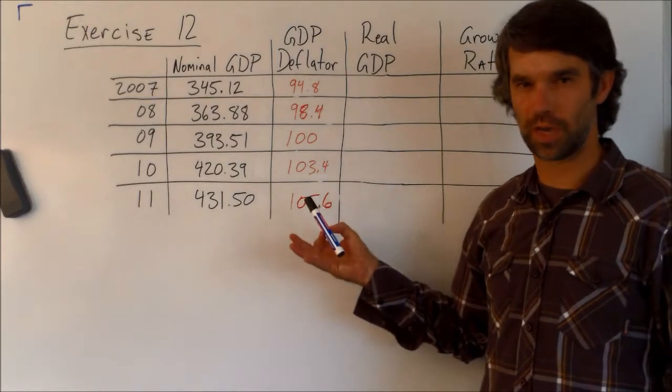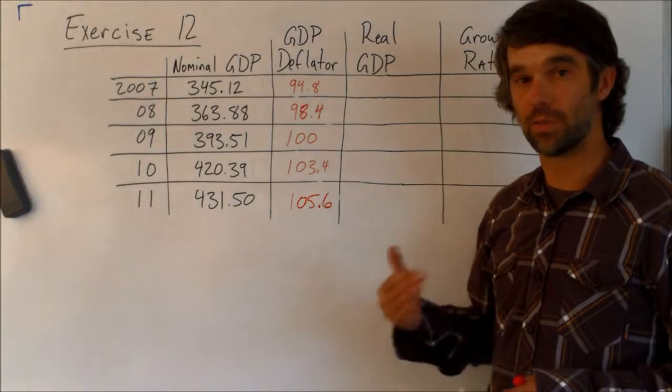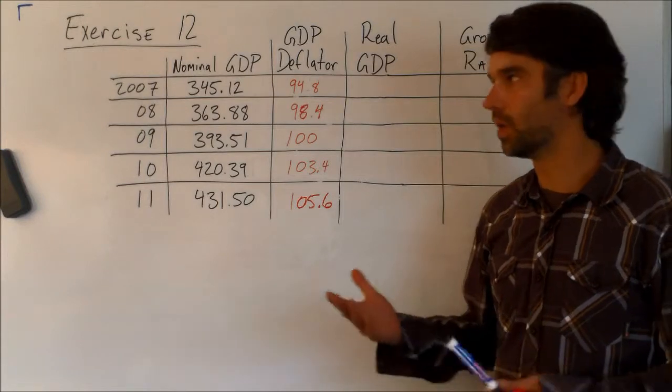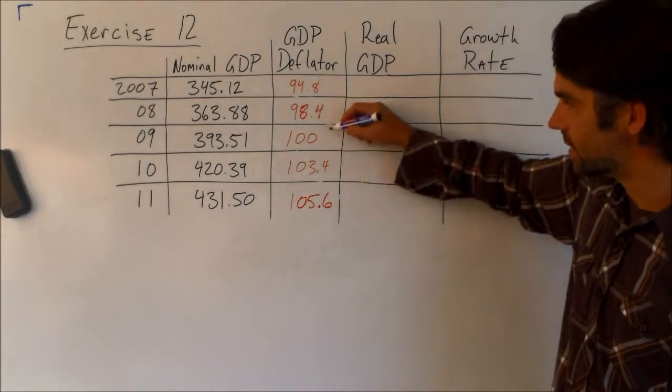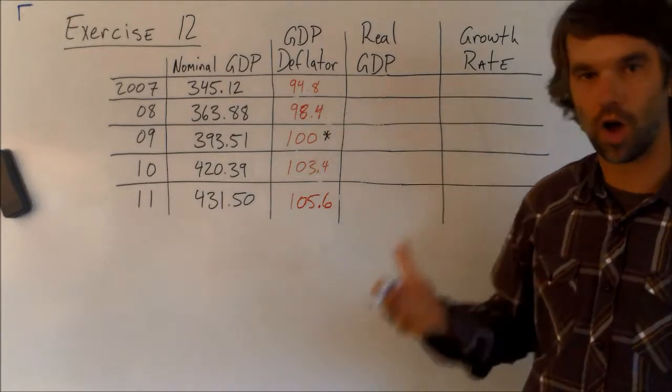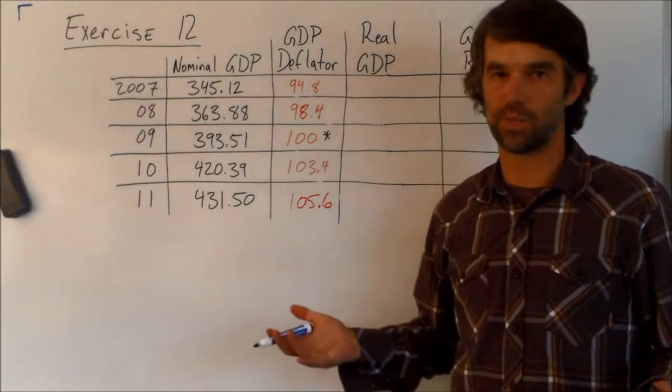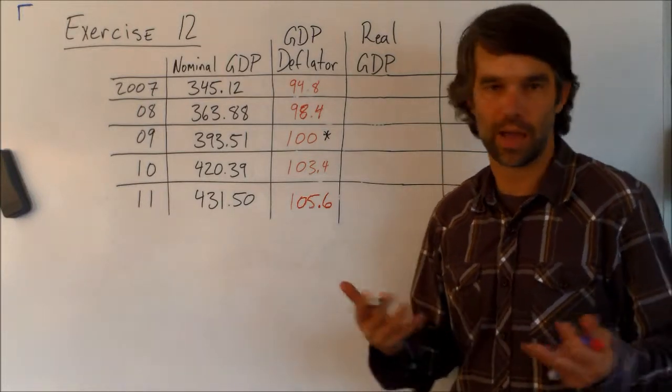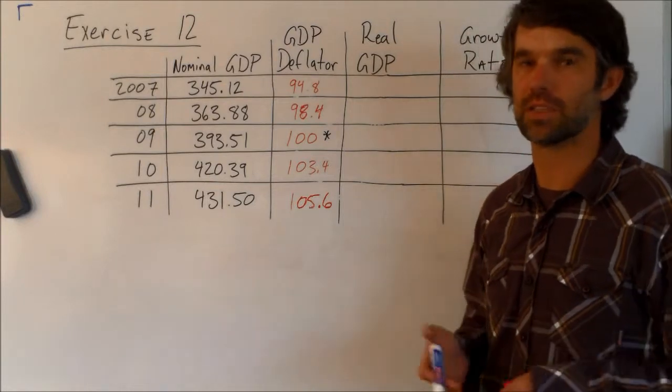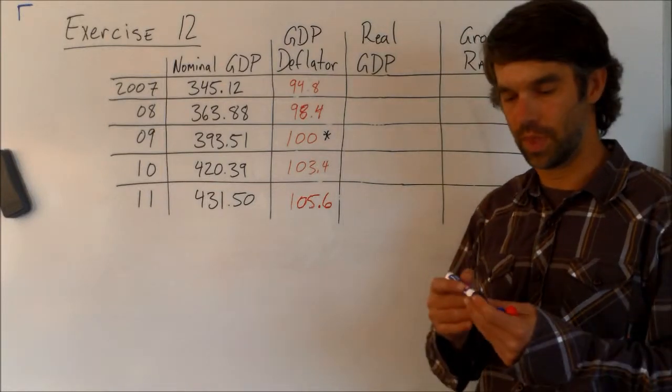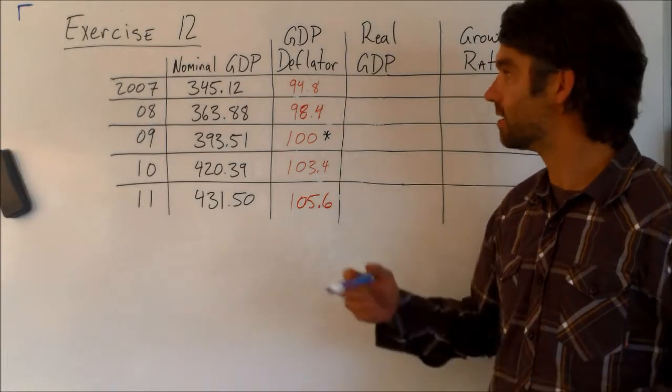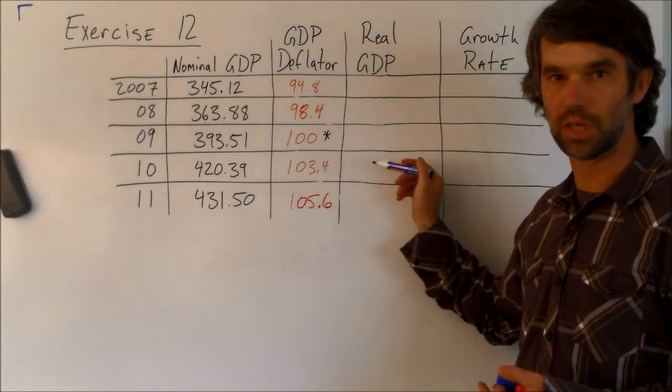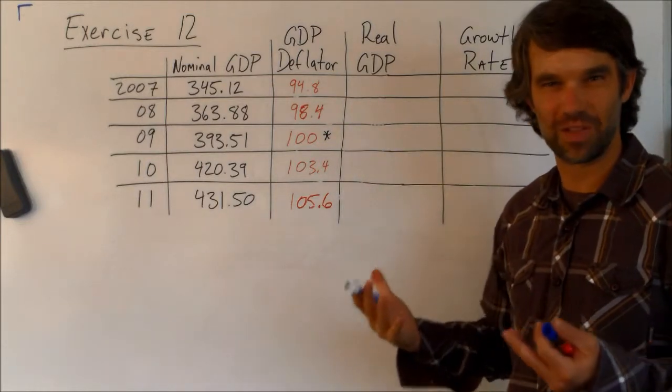So let's make some quick predictions. First of all, we ought to notice that the base year for this is 2009. We know the base year is 2009 because 100 is always the deflator for the base year, unless by some crazy incident there's no inflation between one year and another year. So we can predict very quickly that the nominal GDP is not going to change when we convert it to the real GDP because that's the value that we're adjusting to.